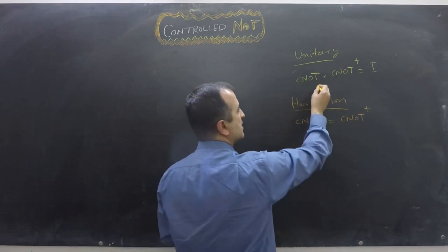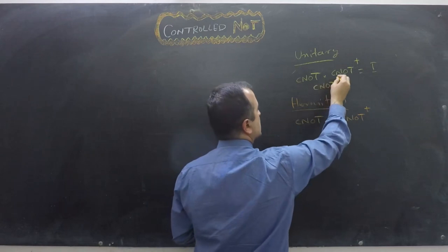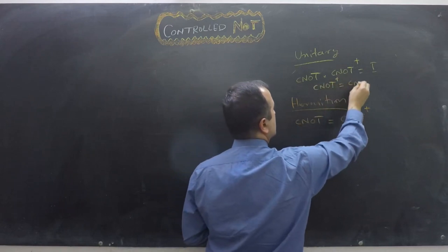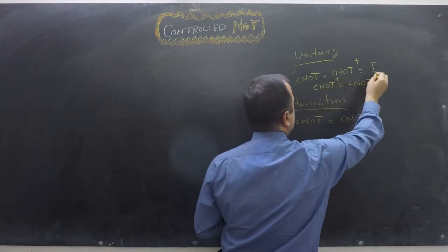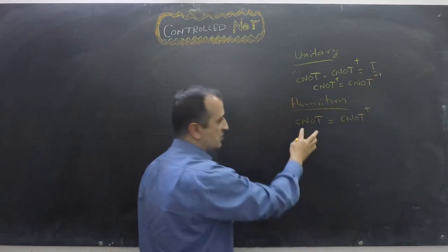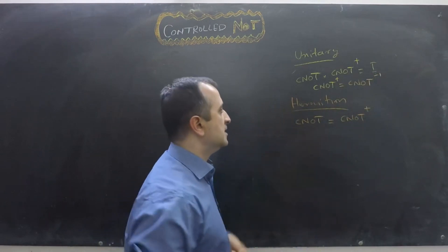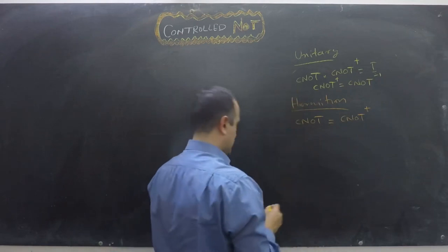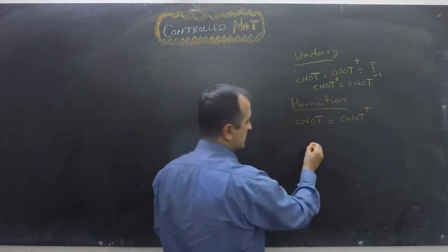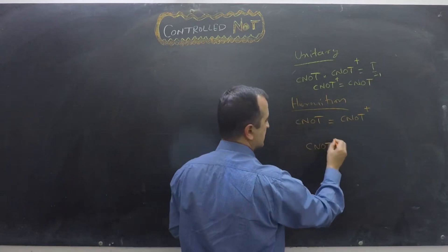So we are saying that the conjugate transpose is the inverse in the unitary case, and that the conjugate transpose equals the original gate in the Hermitian case. From these two statements we can conclude that CNOT is the inverse of itself.